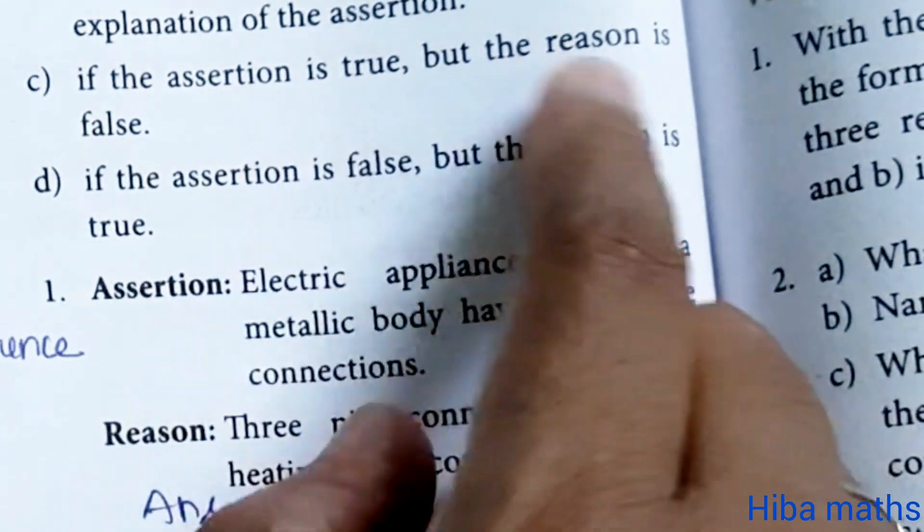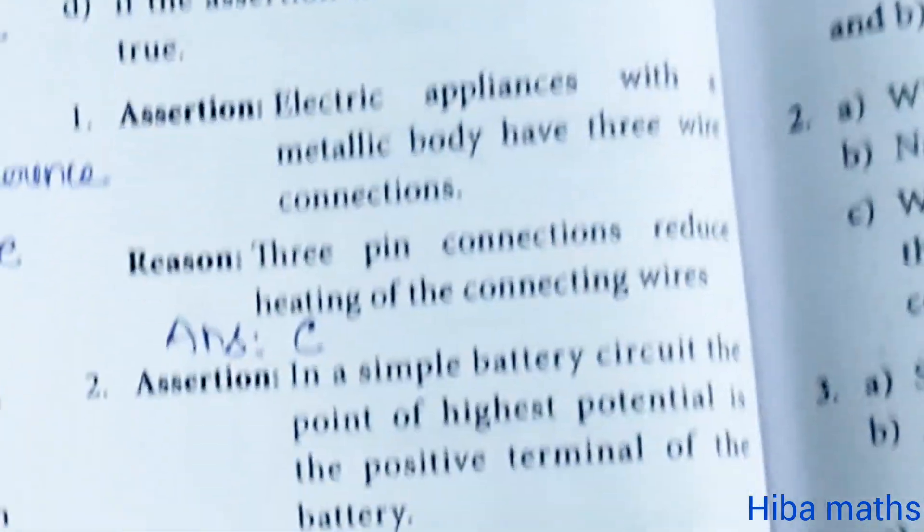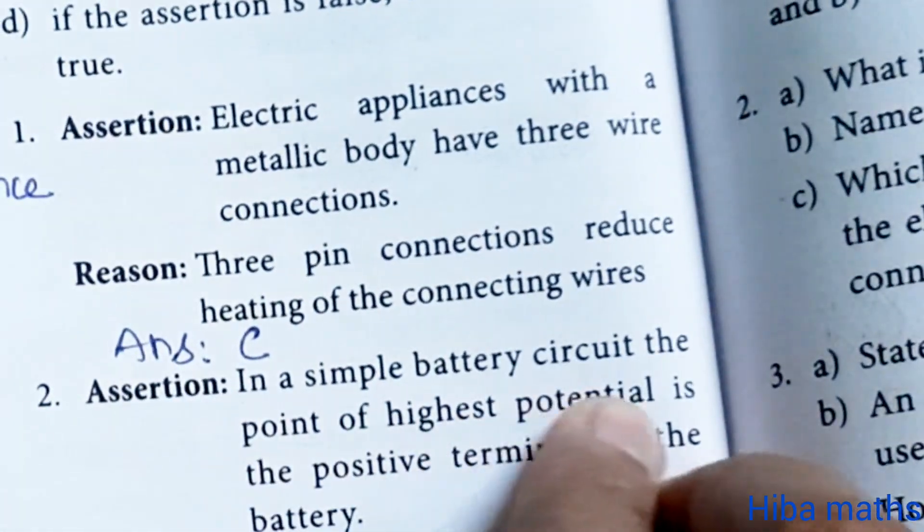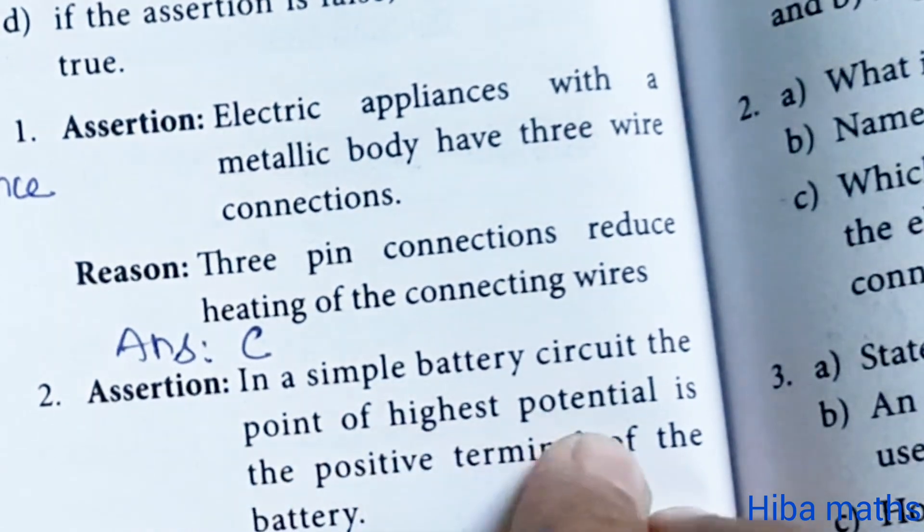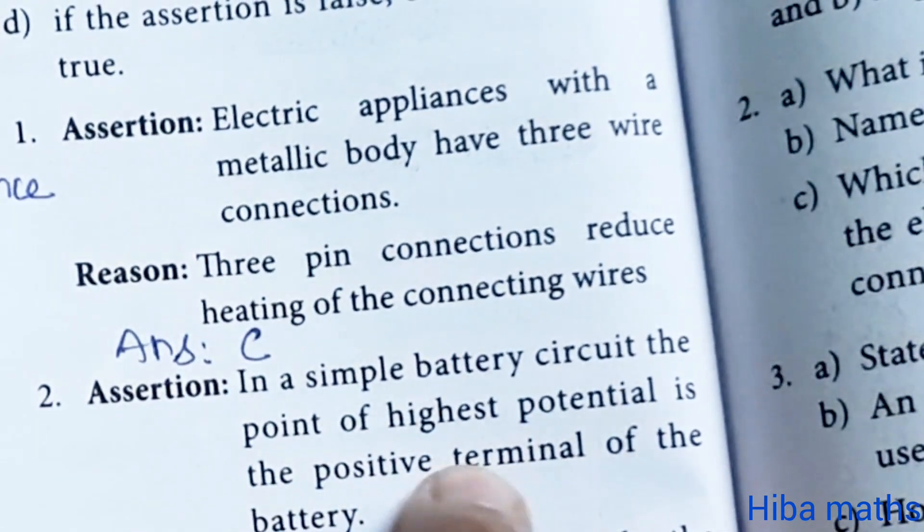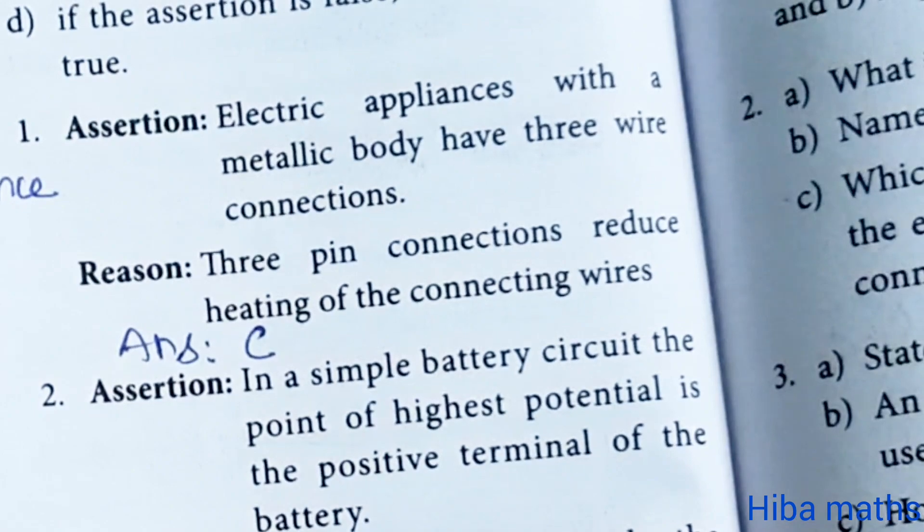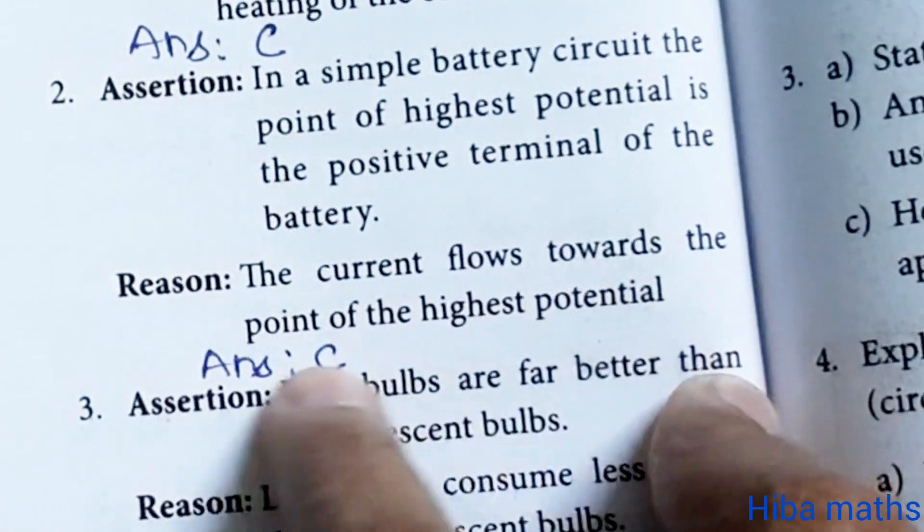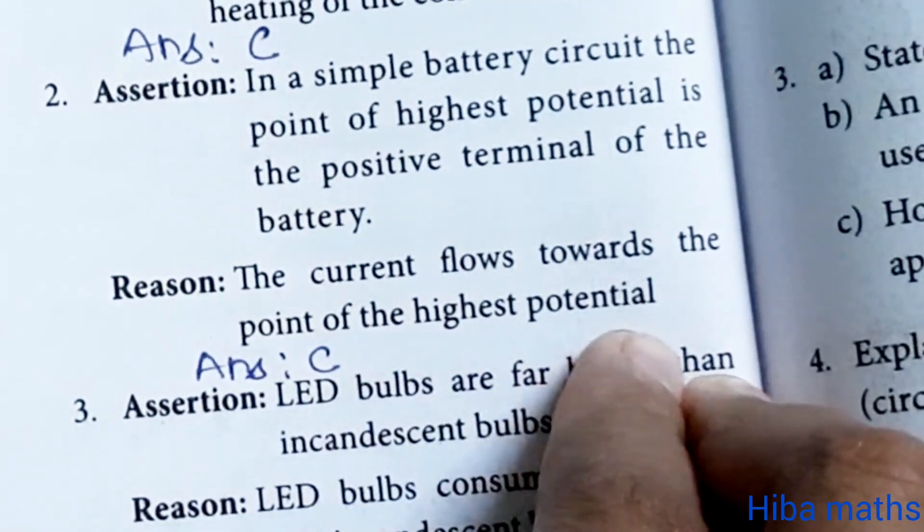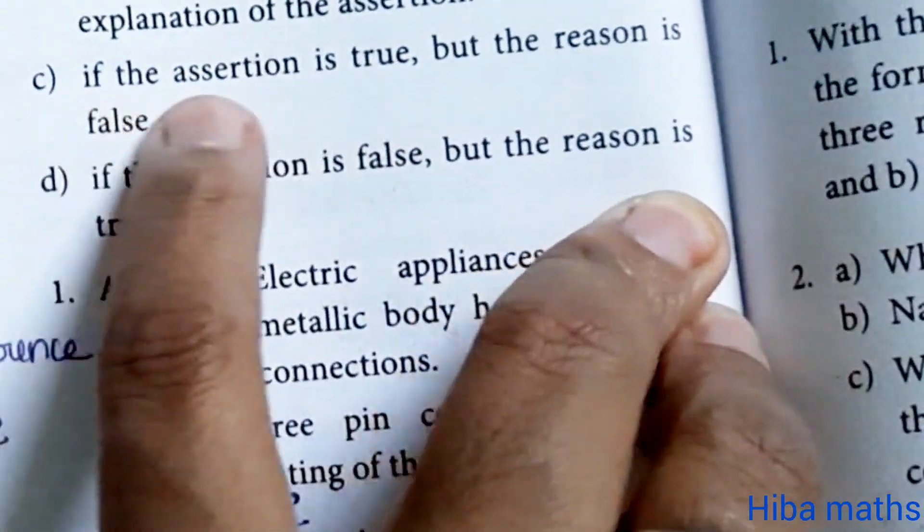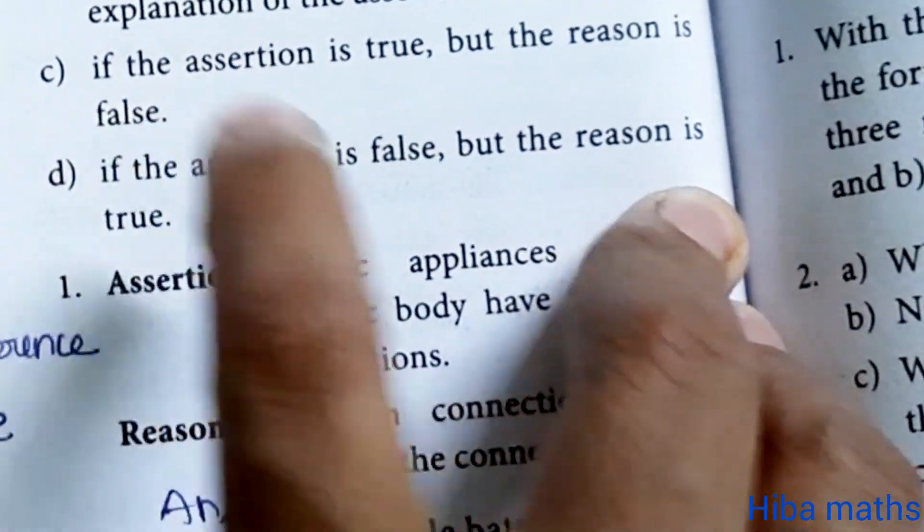Second question: in a simple battery circuit, the point of highest potential is the positive terminal of the battery. Reason: the current flows towards the point of the highest potential. Answer is C. If the assertion is true, but the reason is false.